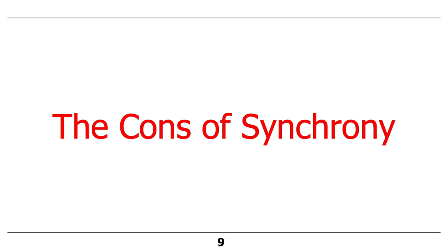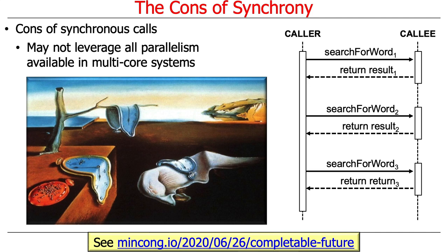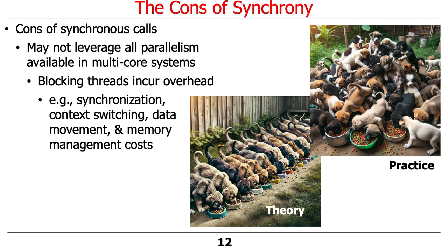Now let's talk about the cons of synchrony. One key problem is that if you use synchronous programming, it may not leverage all the parallelism that's available in multi-core systems. If we've got lots of cores but only a few threads are able to make progress because they're blocking, and all the other ones are blocking, then we have a problem. In general, there's a whole slew of issues with using threads in synchronous code.